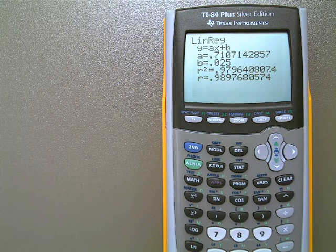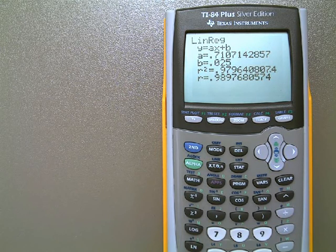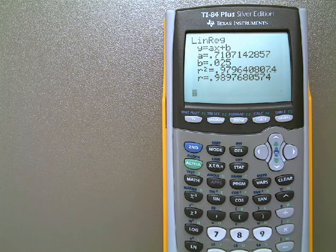Remember, an R value close to 1 means the line fits the data very well. An R value close to 0 means that it doesn't fit the line well.